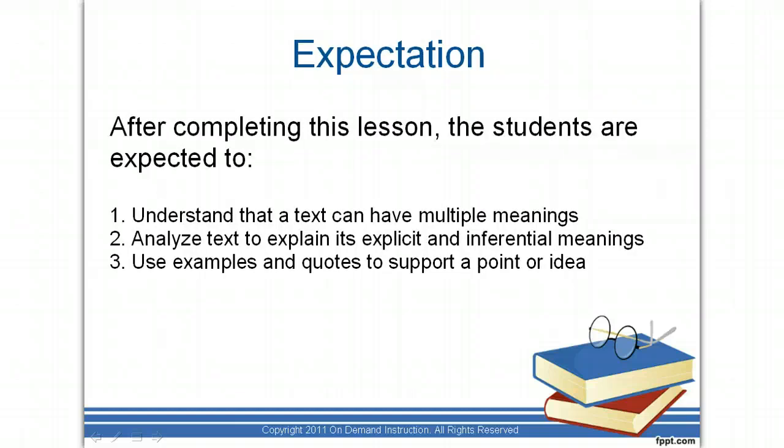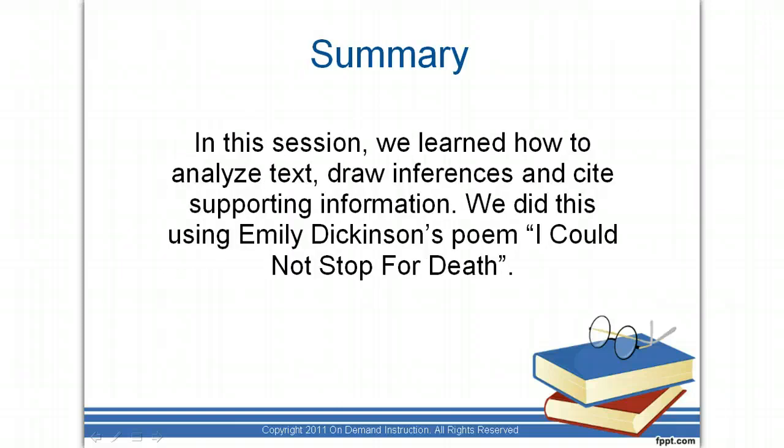In completing this lesson, you are expected to understand that a literary text can have multiple meanings. You are also expected to analyze the text to explain its explicit and implicit meanings, and make inferences from these meanings. Lastly, you are expected to cite parts of the text that best support your inferences. In this session, we learned how to analyze text, draw inferences, and cite supporting information, using Emily Dickinson's poem 'Because I Could Not Stop for Death.'